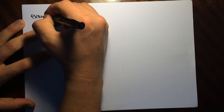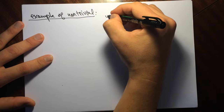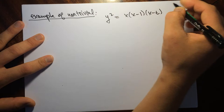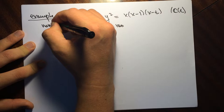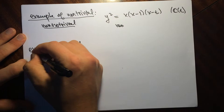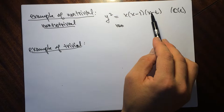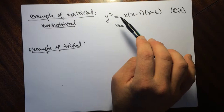Let me give some examples of things that are trivial and not trivial. As an example of something non-trivial: over C(T), the Legendre family of elliptic curves is not isotrivial. This is non-trivial because it parametrizes the level two modular curve — it gives a level two structure.